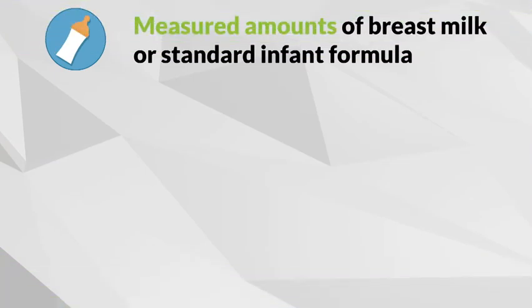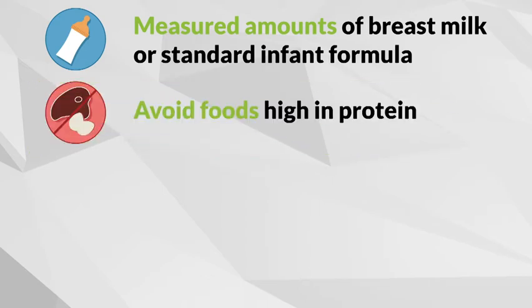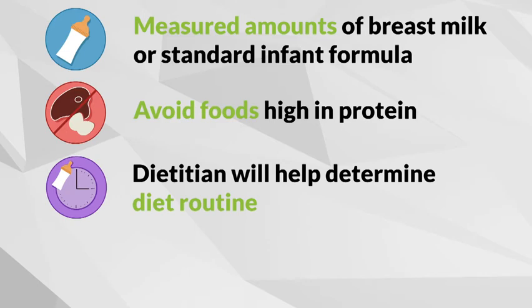This means that your baby can only have a measured amount of breast milk or standard infant formula. As your child gets older and starts eating regular food, foods that are high in protein must be avoided since all protein contains lysine and tryptophan. Your dietician will tell you how much breast milk, infant formula, and foods with whole protein to feed your baby.